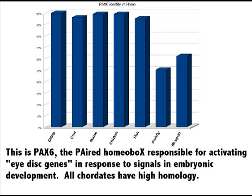Pax6 is more distantly related in fruit flies. I would predict that Pax6 had a predecessor in early bilaterians, but that it was modified after vertebrates and invertebrates parted ways. This would make sense considering the differences in eye morphology between flies and humans.